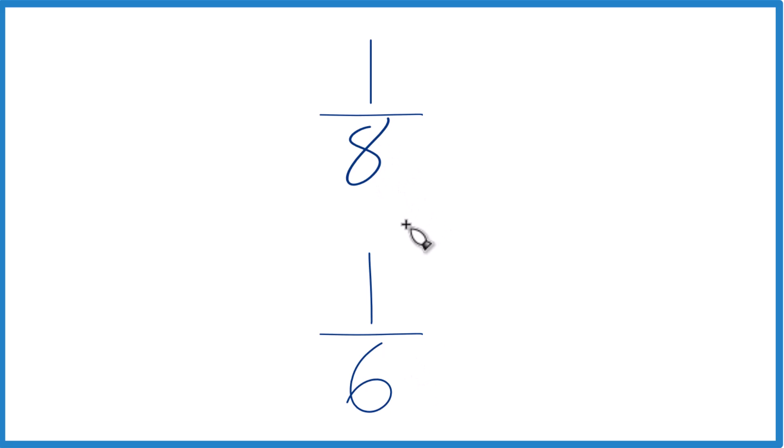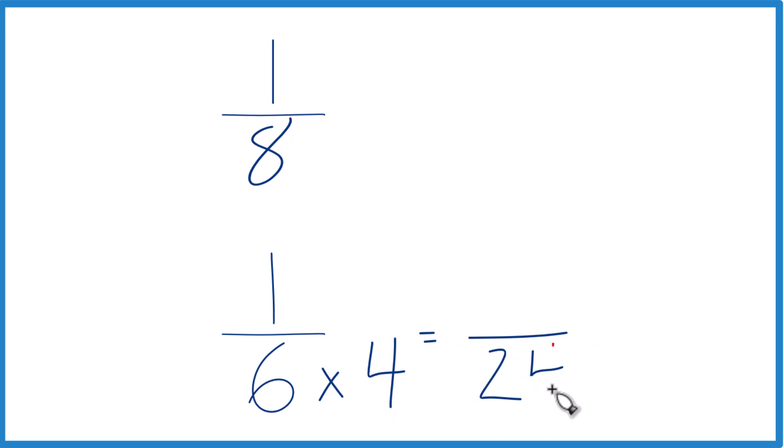You could also use a calculator to figure this out, or you could find a common denominator, something that both 8 and 6 go into evenly. So I think 6 times 4, that gives me 24. And then 8 times 3, that gives me 24 as well.